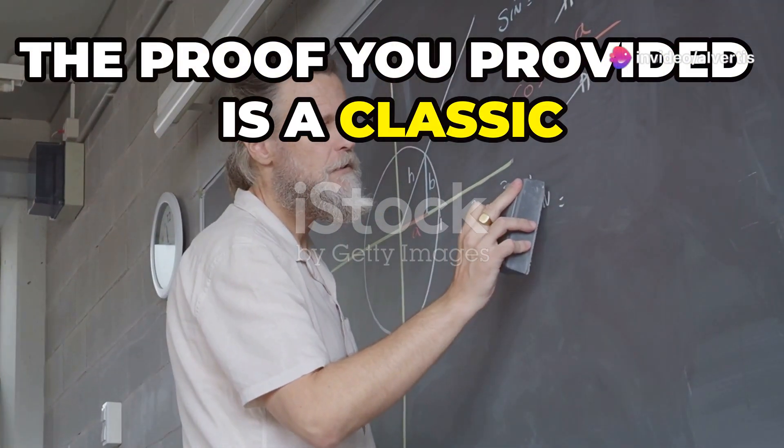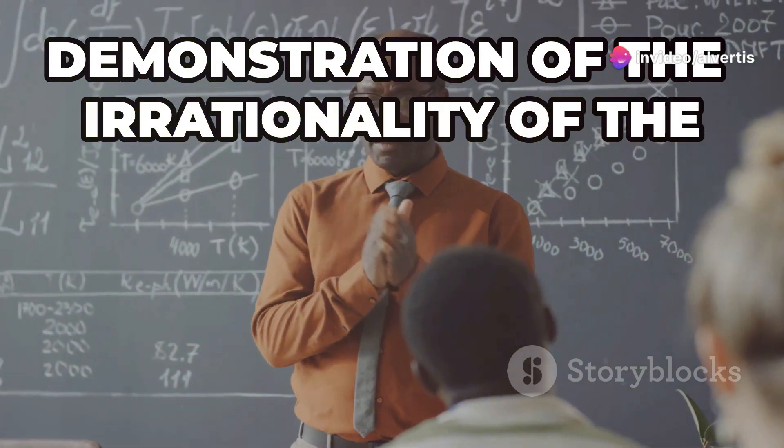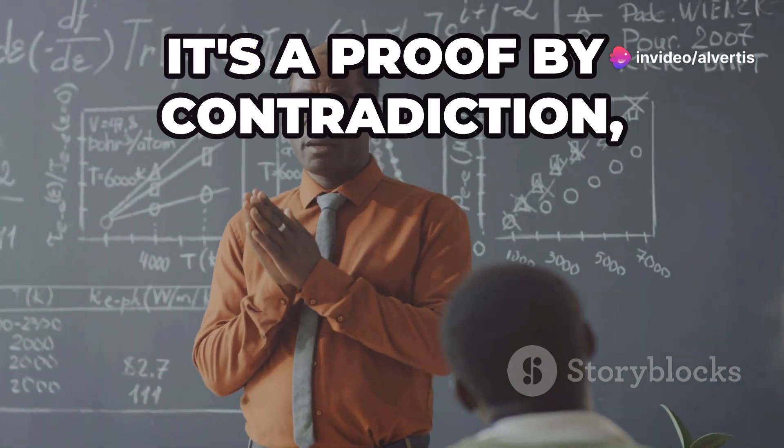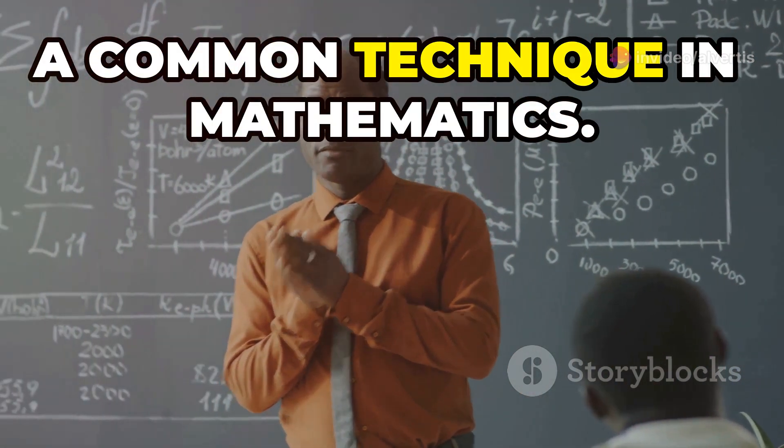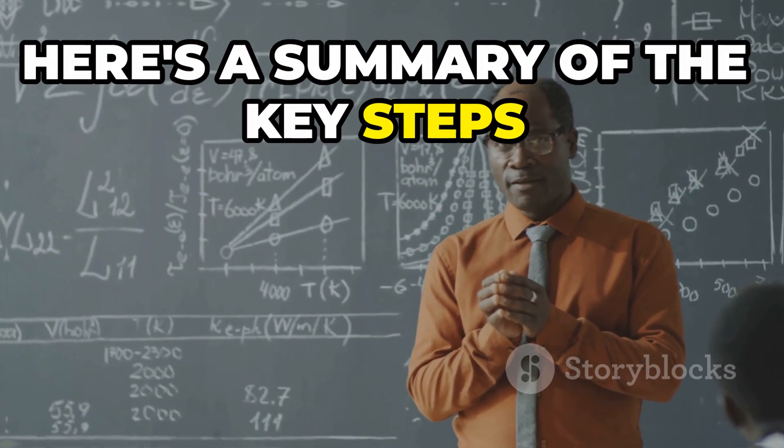The proof you provided is a classic demonstration of the irrationality of the square root of 2. It's a proof by contradiction, a common technique in mathematics. Here's a summary of the key steps.